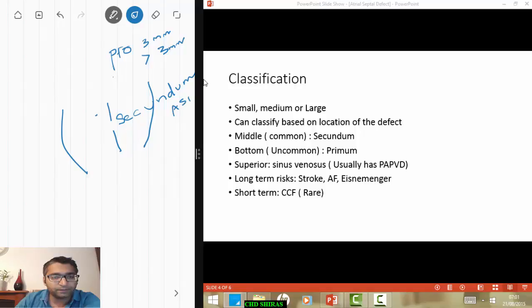If you have a hole right at the bottom over here, we call it a primum ASD. Now primum ASD is a type of endocardial cushion defect because obviously just below it is your tricuspid valve, your mitral valve, LV, RV, your septum. So if you have a defect there, you can see that it might affect the AV valves, might also have an additional hole over there. So primum defect, most people would argue, is not just a pure straightforward ASD but perhaps a part of a wider condition called atrioventricular septal defect.